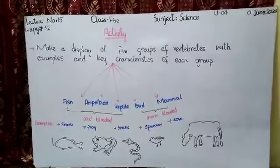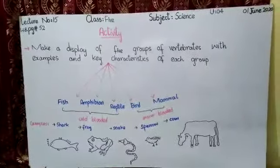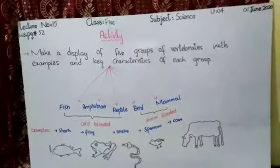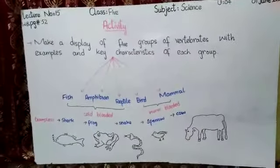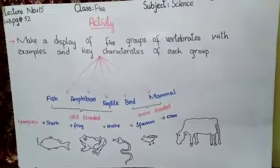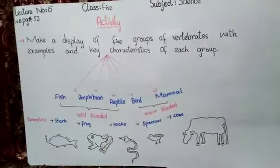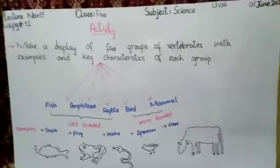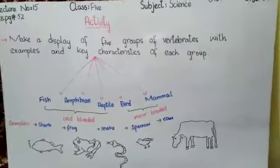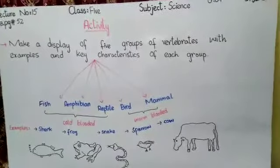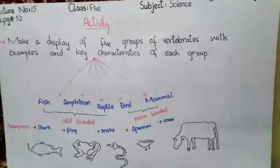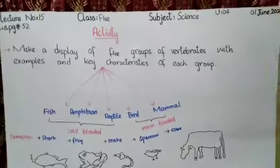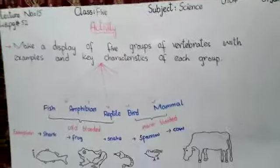Assalamu alaikum, class five, this is your science lecture number 15. In this lecture I am going to discuss one of the activities from your workbook page number 52. The activity is: make a display of five groups of vertebrates with examples and key characteristics of each group. This is an attractive display where you have to show vertebrates of five groups with examples and their key characteristics.